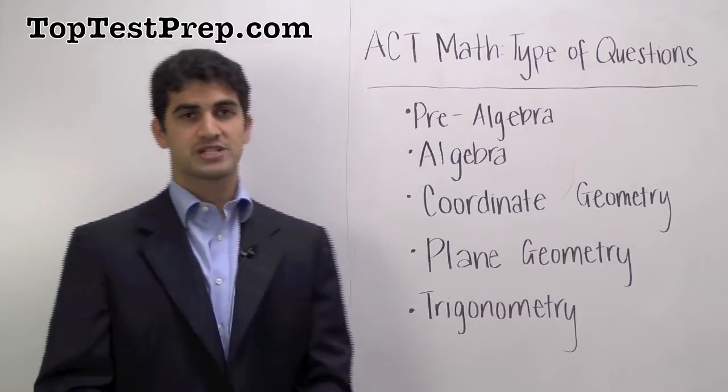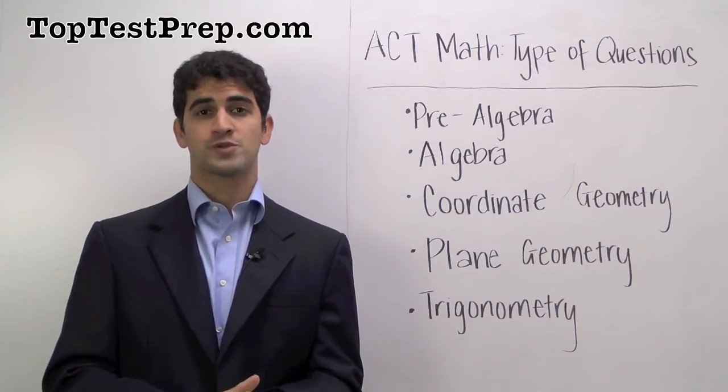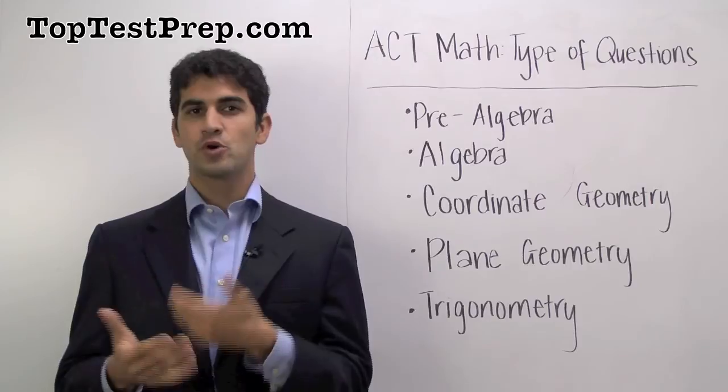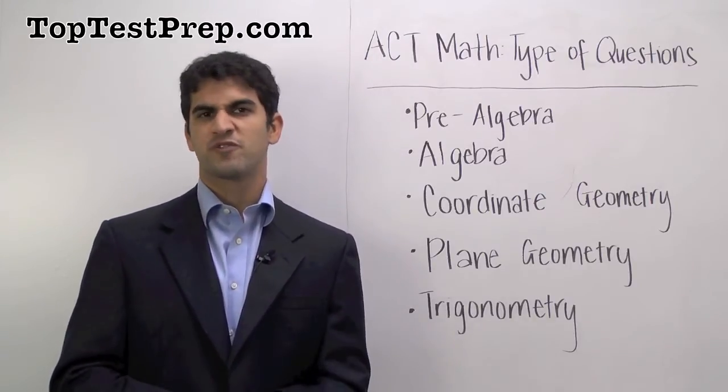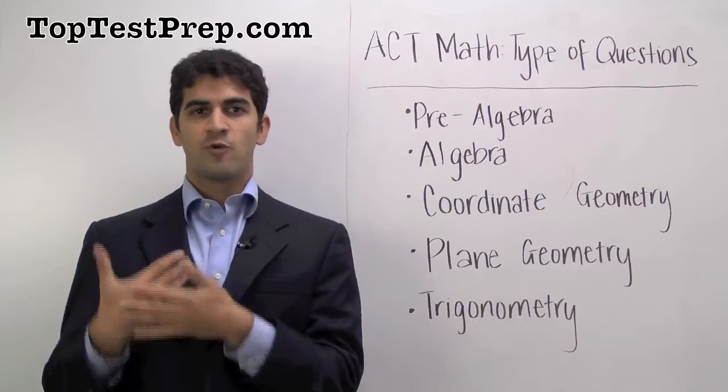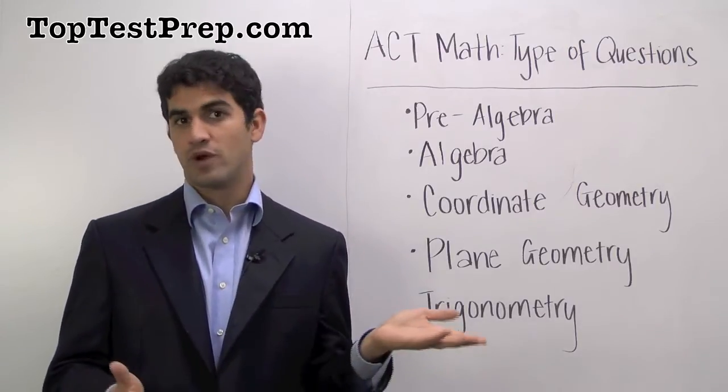The first is pre-algebra topics. These are topics drawn from the earlier parts of your Algebra I class and from the year before Algebra I. So, these will be more simple questions that have some arithmetic component and some algebraic component. For instance, you might be given four numbers that when averaged together give you a fifth number and you have to solve for one of those four numbers.